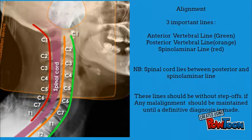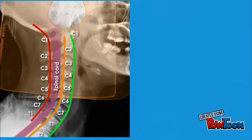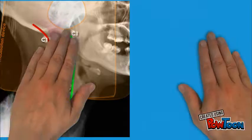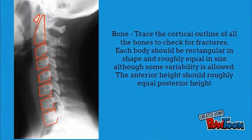Inspect the anterior vertebral line in green, the posterior vertebral line in orange, and the spinal laminar line in red. Note that the spinal cord lies between the posterior vertebral and the spinal laminar lines. Trace the cortical outline of all the bones to check for fractures.